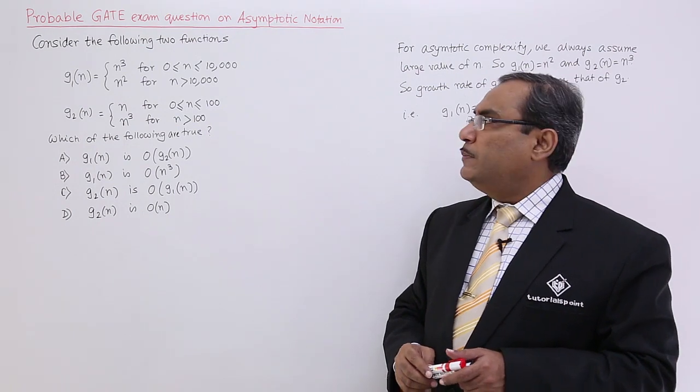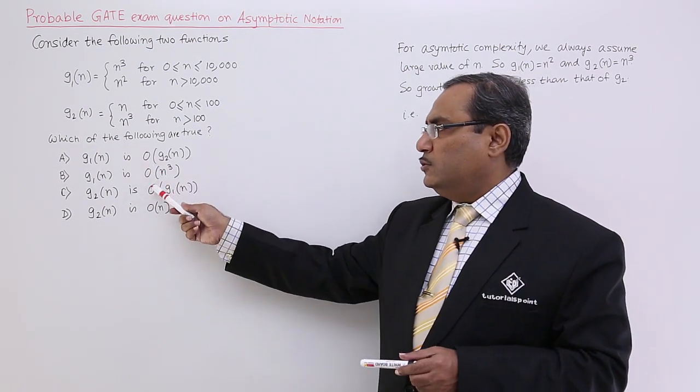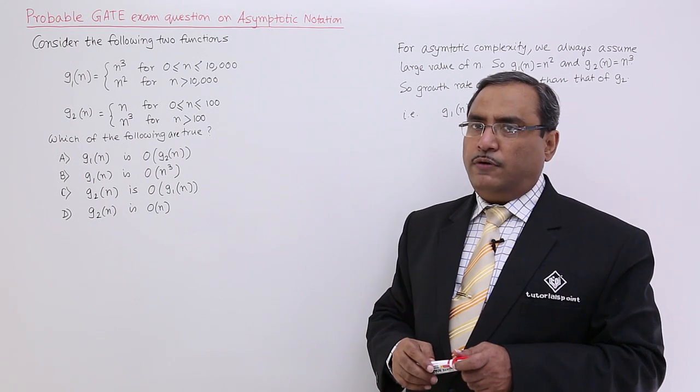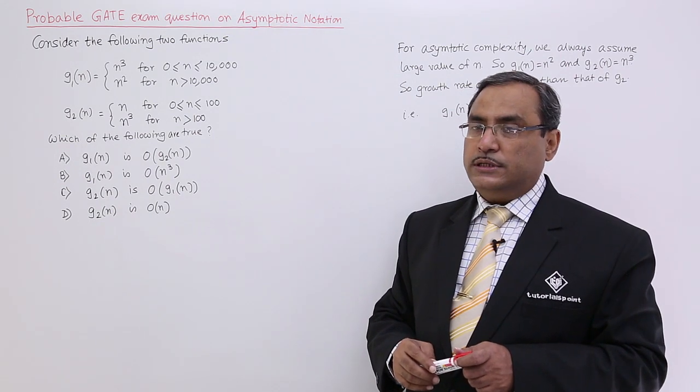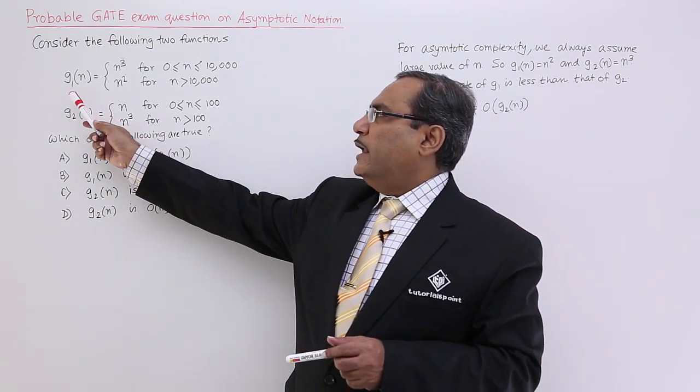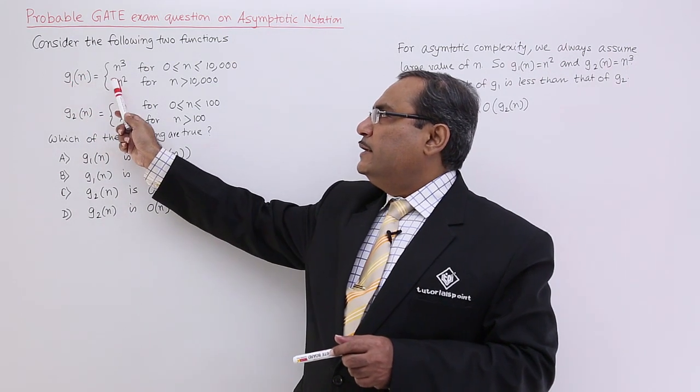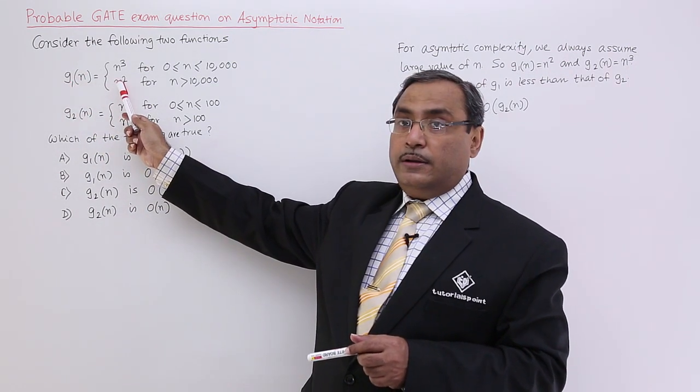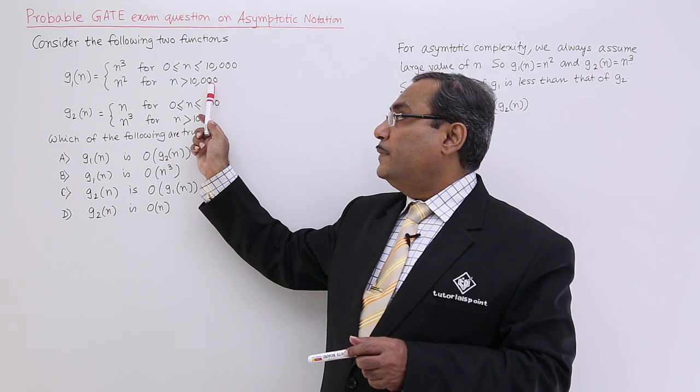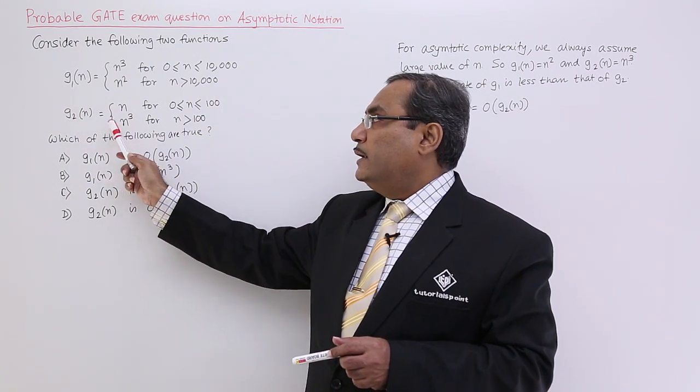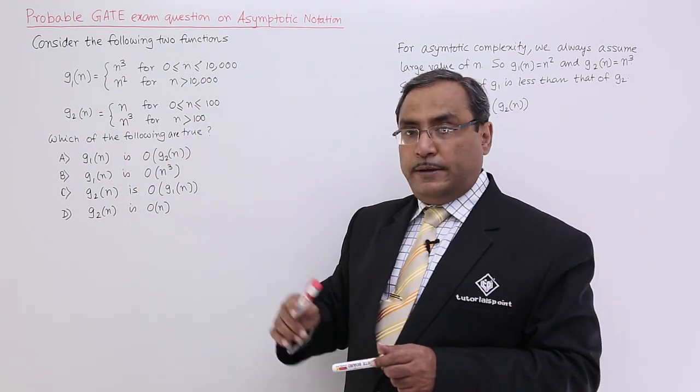Always remember, whenever we go for any kind of asymptotic notations, we always consider the larger value for n. That means we can easily write that g1(n) is nothing but n² because I will be going for the larger value of n, and for g2(n) I shall go for n³ for the larger value of n.